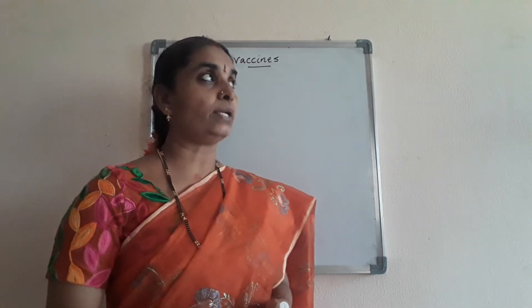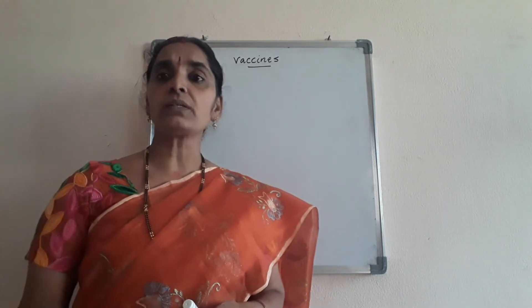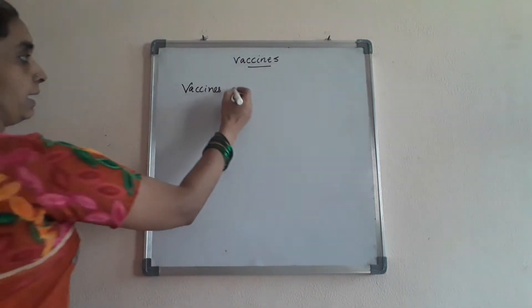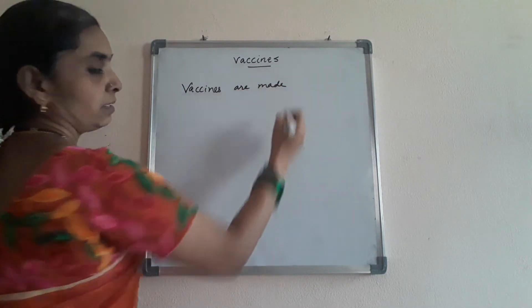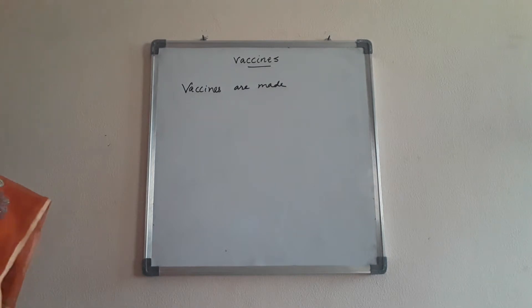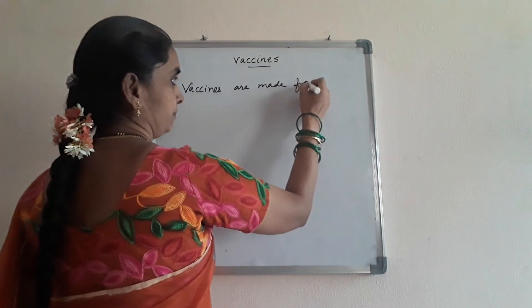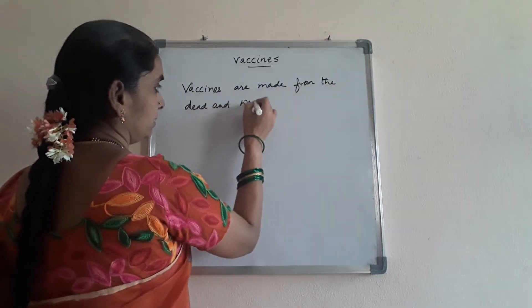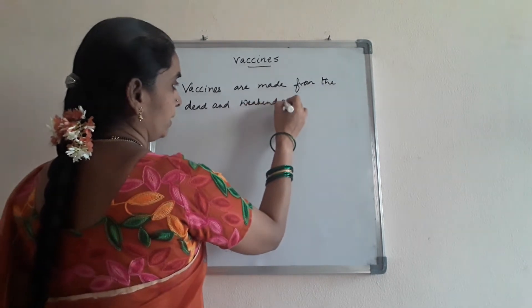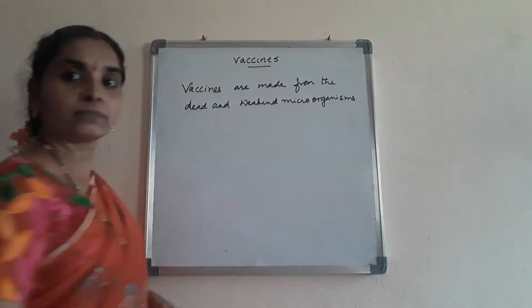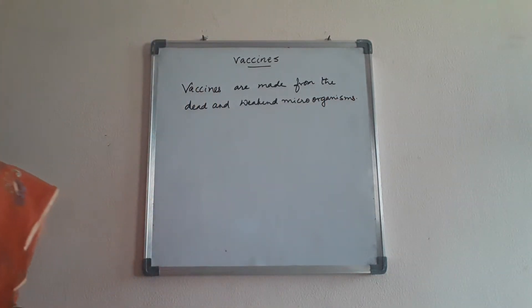Now I will tell you how vaccines are prepared — write this down in your notebooks. Vaccines are made from dead and weakened microorganisms. Vaccine is given before the person is affected with the disease.